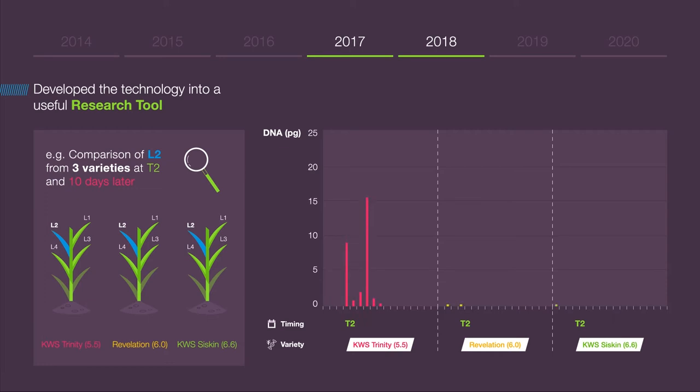These results showed us that there was little to no disease present in the two stronger varieties, Revelation and Siskin, whereas Trinity did have septoria present. This means that the fungicides would have been under greater pressure on the Trinity compared to the other two varieties. We then tested leaf 2 again 10 days later on the same varieties to reflect a delayed T2 application timing. These results showed that the disease levels had escalated on the leaf 2 in all varieties in this short time, but much less so in the more resistant KWS Siskin. This highlights the value of genetics in supporting the chemistry.